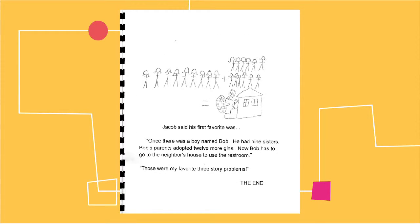Jacob said his first favorite was once there was a boy named Bob. He had nine sisters. Bob's parents adopted 12 more girls. Now Bob has to go to the neighbor's house to use the restroom.